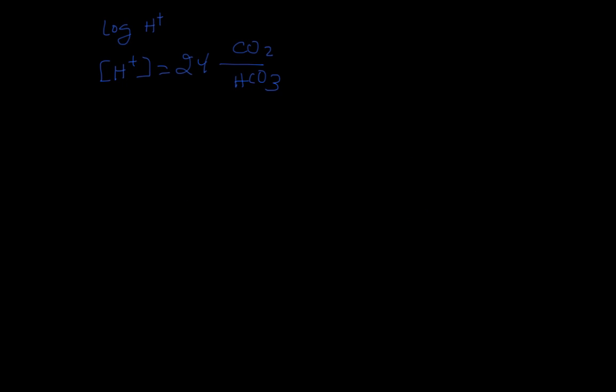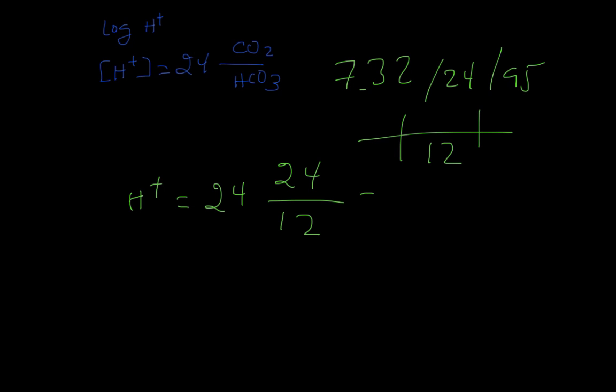If we take the example that we just had, pH of 7.32, 24, 95, and if you remember, the bicarb was 12, and try to apply the equation, you'll have hydrogen ion concentration equals 24 times CO2, which is 24, divided by bicarb of 12, and that equals 48.